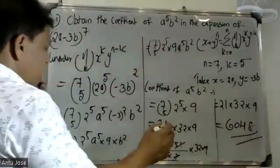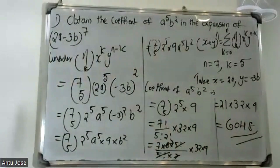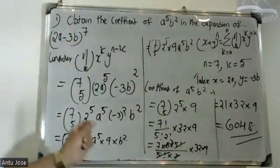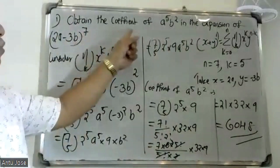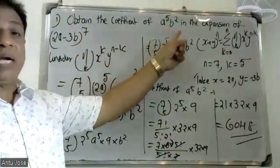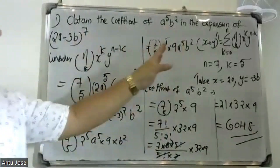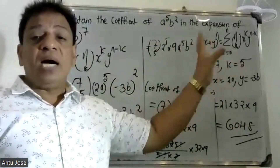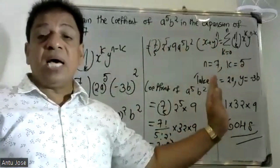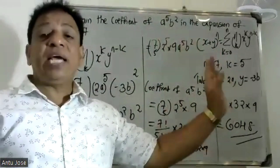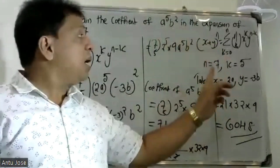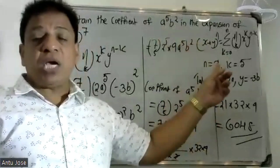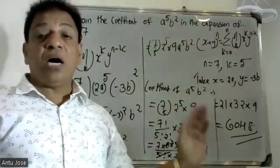To recap: x and y are two variables and n is a positive integer. Then x plus y raised to n equals sigma, nCk, x raised to k, y raised to n minus k. That is our binomial theorem formula.